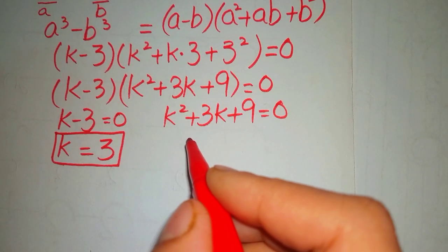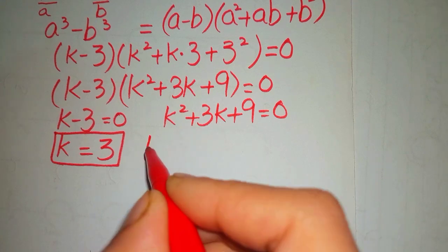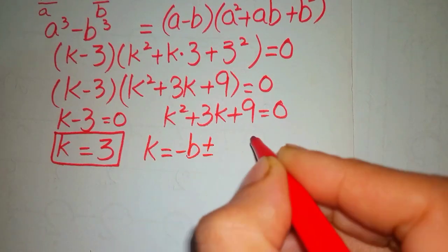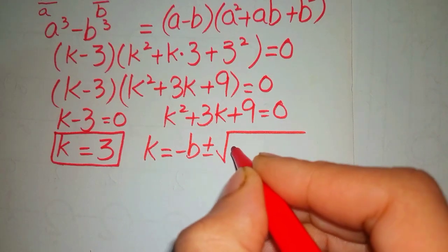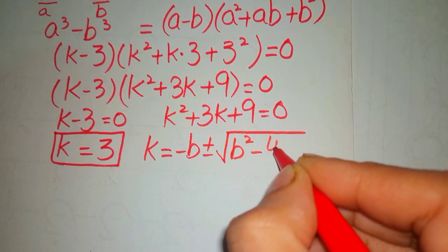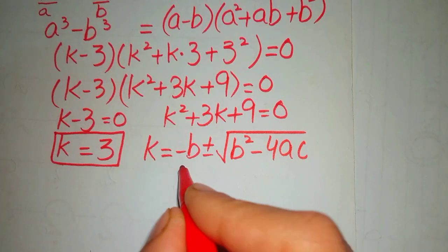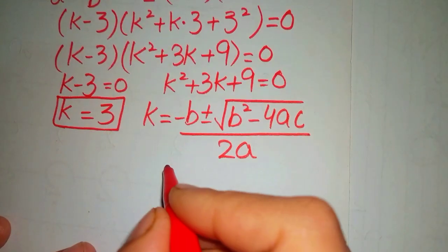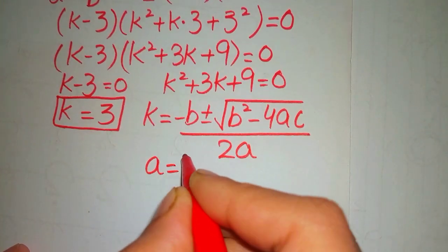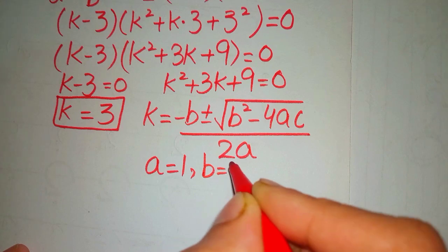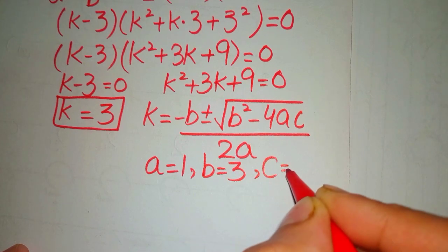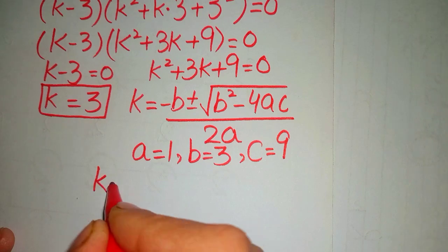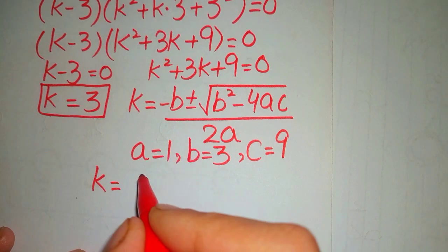For the second factor, we apply the quadratic formula: k equals minus b plus or minus square root of b squared minus 4ac, over 2a. Here our values are a equals 1, b equals 3, and c equals 9.